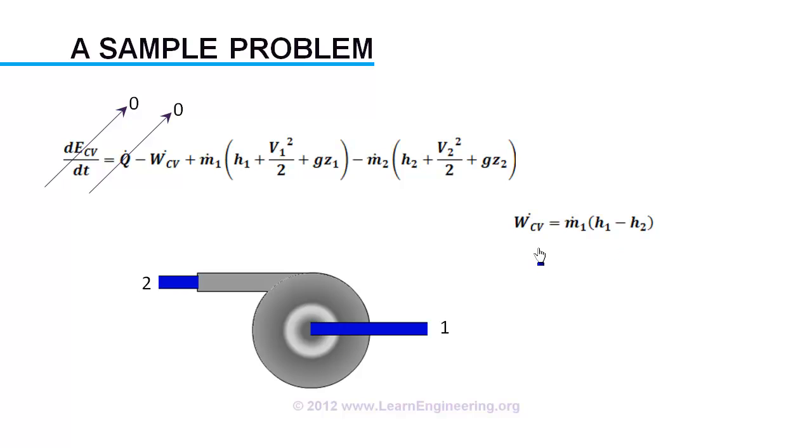Work done by the control volume or by the pump is mass flow rate into change in enthalpy. If you want to find out work required to the pump or to the control volume then you just reverse the sign. Using the same approach we can solve many other energy transfer problems in industries.